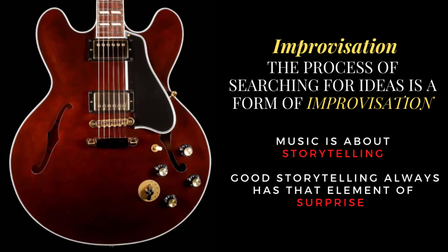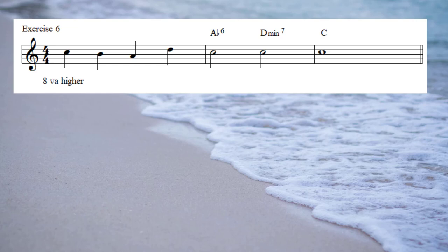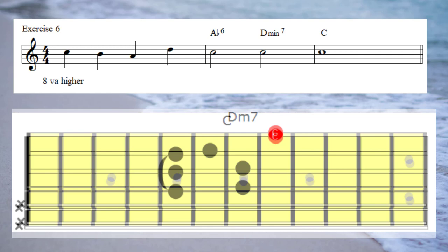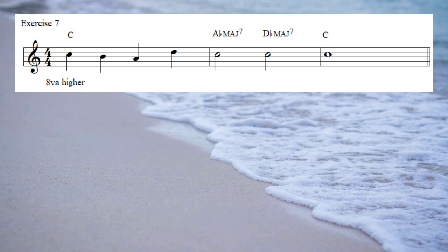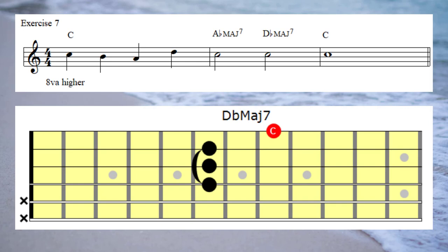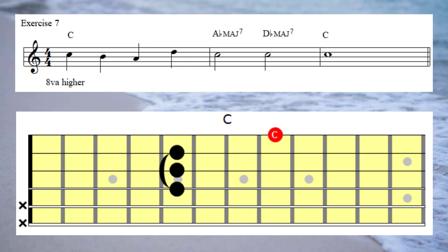Let's have a listen to example number 6 — the same melody with some surprise chords at the end. Now example number 7: the same melody with surprise chords at the end. And here's another example — same melody but a different ending. Here's example number 8.